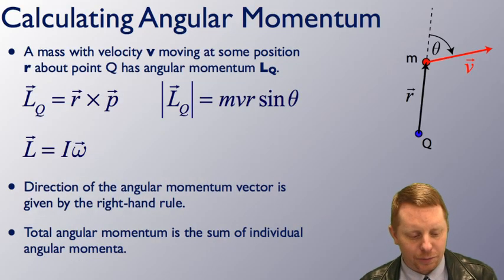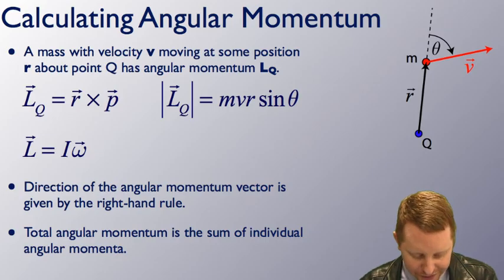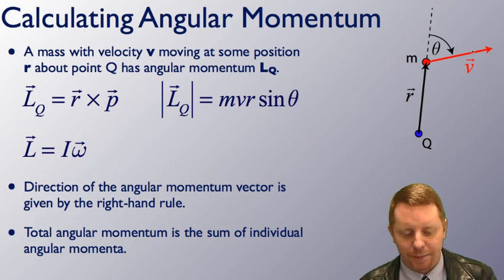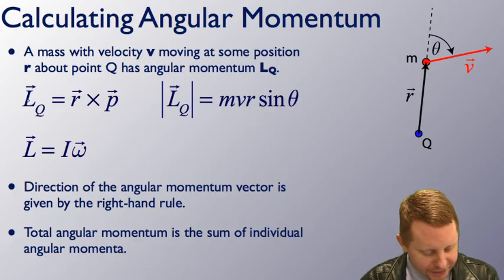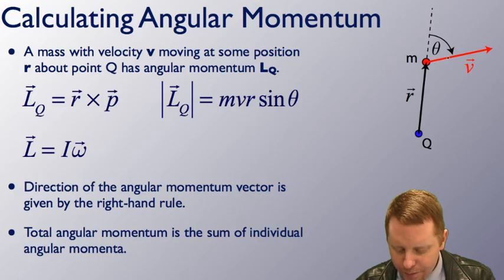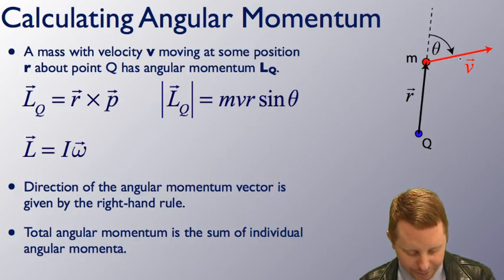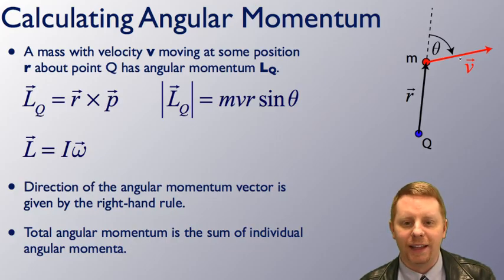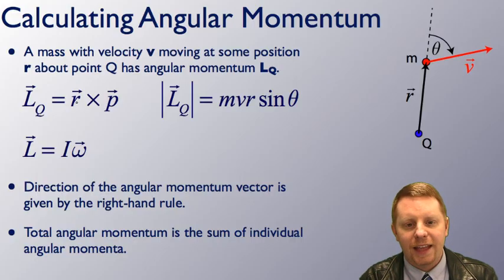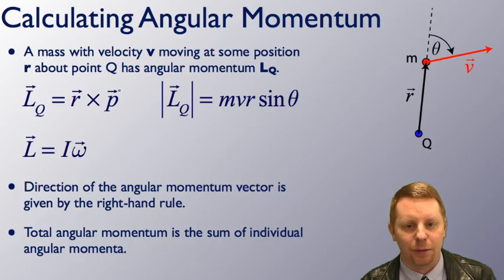So if we want to calculate angular momentum, let's assume we have some mass m with velocity v moving at some position r about point Q, traveling in a given direction. The angular momentum depends upon the point you're measuring it from. We denote this as angular momentum L about point Q, equal to the position vector r crossed with the momentum vector mv. To get its direction, we use the right-hand rule: point the fingers of your right hand in the direction of the position vector from your reference point to the particle, then bend them in the direction of the object's momentum vector. Your thumb will point in the direction of positive angular momentum. It's a cross product.